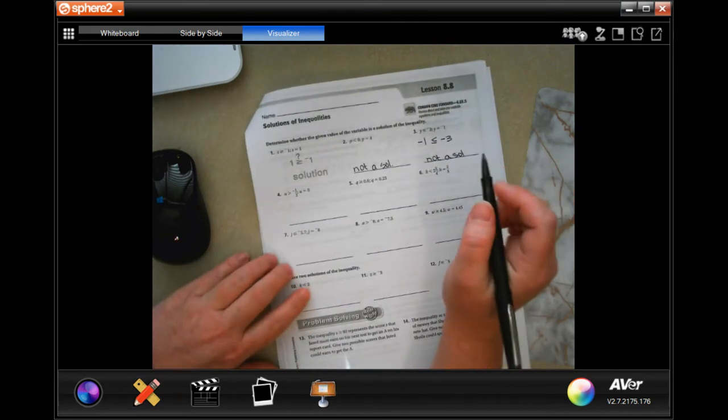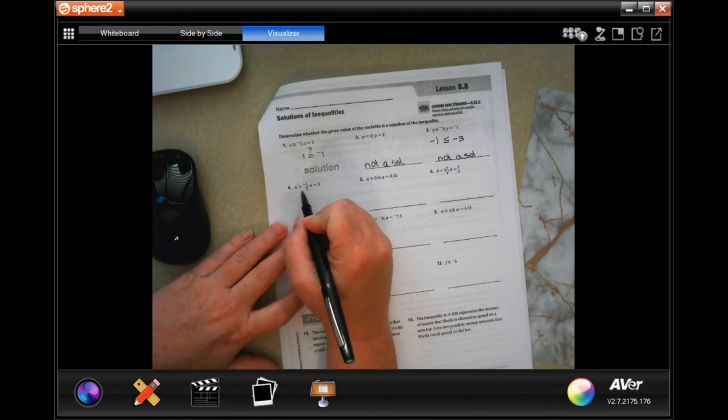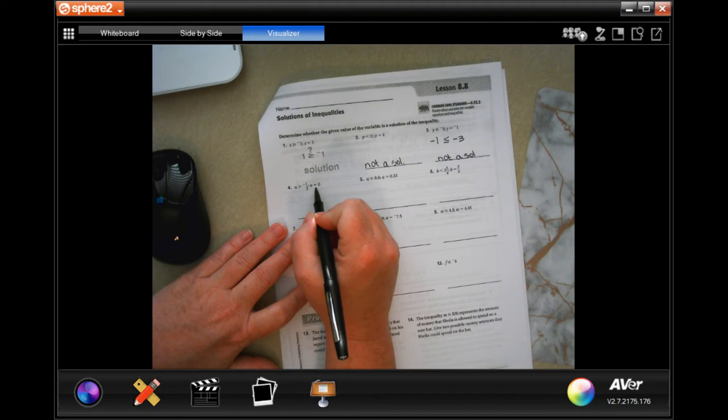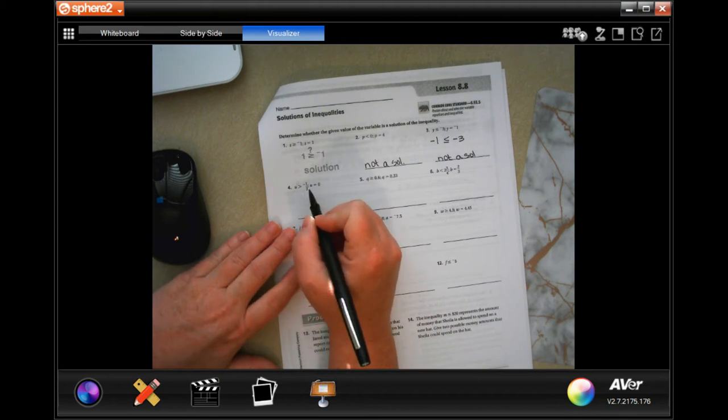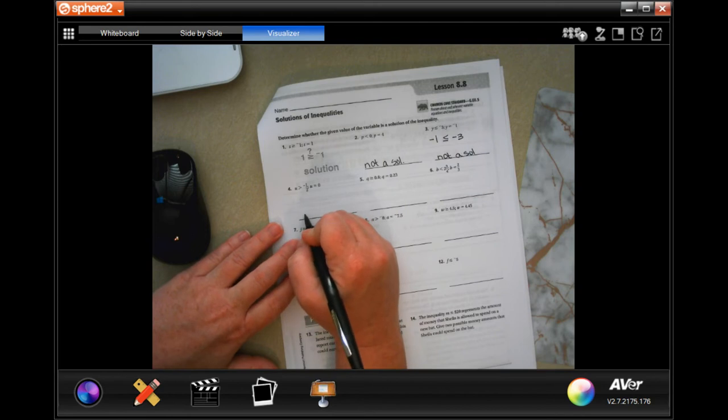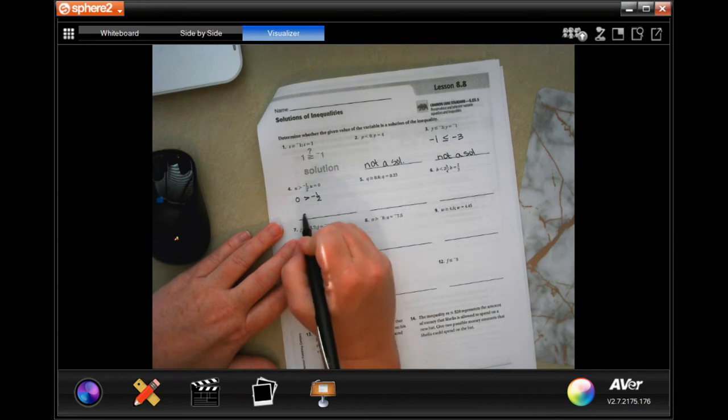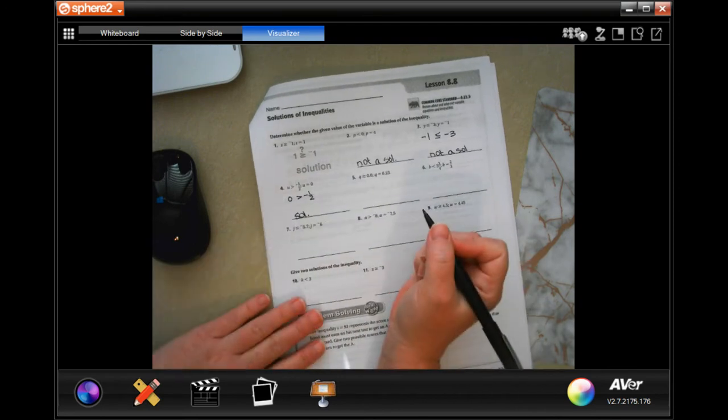This one says that u is bigger than negative 1 half, where u is equal to 0. Well, any time that the other number is a negative number, 0 is going to be bigger. So u being 0 means 0 is bigger than negative 1 half. Well, that's true, so solution.